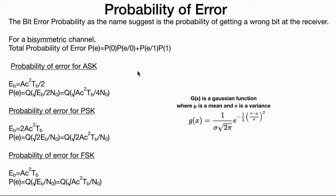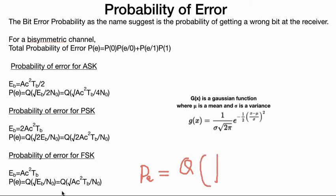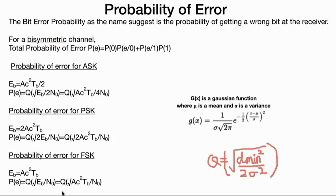Error probability for ASK: the probability of error is dependent on bit energy and the noise. The basic formula to calculate probability of error is Pe equals Q(√(d²min / 2σ²)). The d²min for ASK equals Eb, for PSK it equals 4Eb, and for FSK it equals 2Eb. Here sigma squared is the power spectral density of noise, which equals Eb / (2N0).